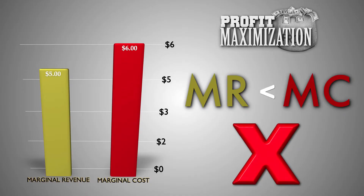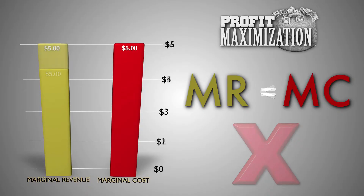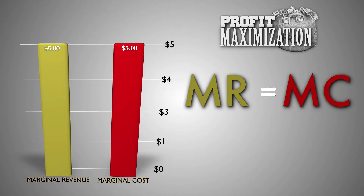Therefore, producing that unit would generate a loss for the firm. But if the marginal revenue of a unit of good M is equal to its marginal cost, the firm can be certain that profits have been maximized because the cost of producing the unit equals the revenue gained when selling it. This means there is no more revenue to be gained for the firm, not even by producing a single additional unit.